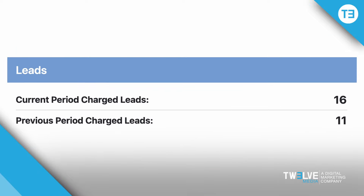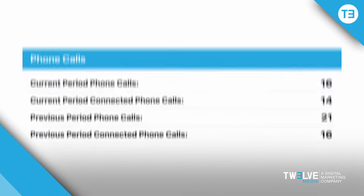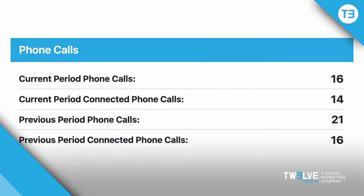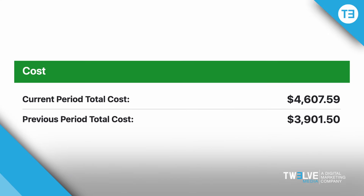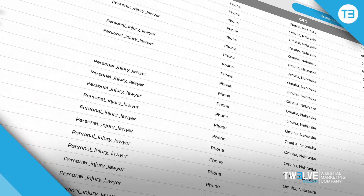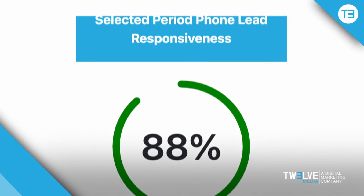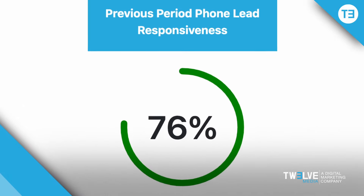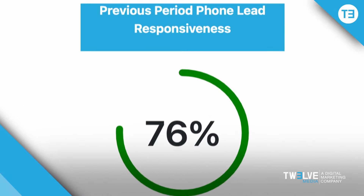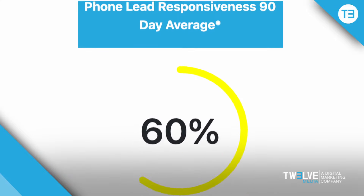Our Google local services ad tool reports directly on the metrics Google is hiding from you, as well as all the data included in the ad account dashboard, but compiled in a much clearer and more robust way. With just a quick glance, you'll be able to see exactly what's happening with your ad account and what's affecting your ranking in the LSAs.